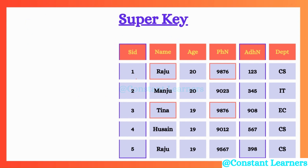Here we have the students table. We can either use a single attribute as a super key or take a combination of two or more attributes to form the super key. The first criteria is that it should uniquely identify the tuples. We already have the SID column where all values are unique — 1, 2, 3, 4, 5 — so this column can automatically be a super key. The name column has two students with the same name, so it is not uniquely identifying a row and cannot be a super key.